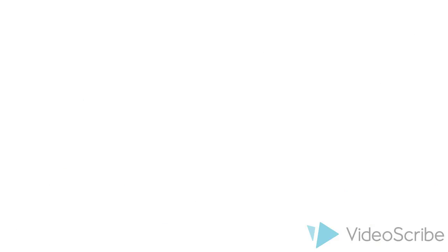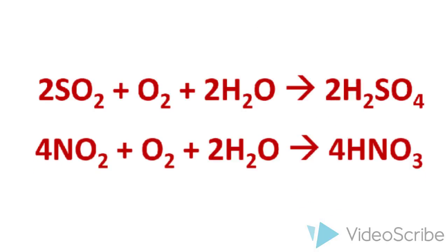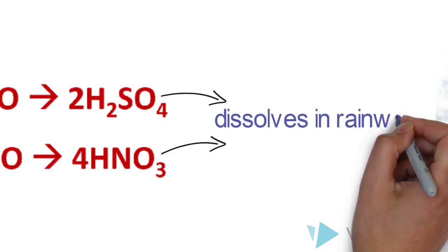So, these are two key equations that you must take note of. Firstly, sulfur dioxide can react with oxygen and water to form sulfuric acid. Secondly, nitrogen dioxide can also react with oxygen and water but this time around to form nitric acids. When these two acids dissolve in rain water, acid rain is formed.